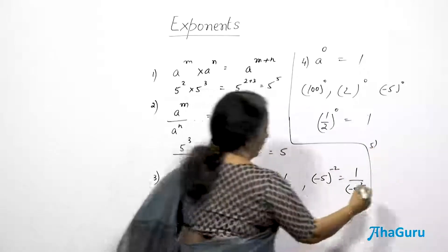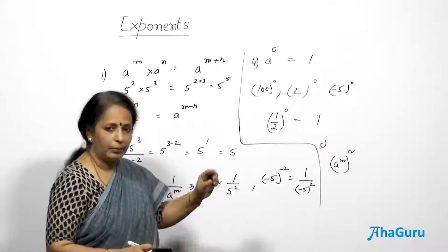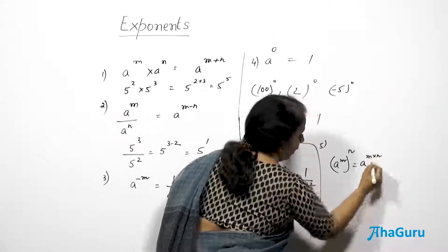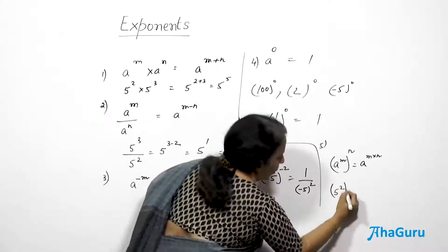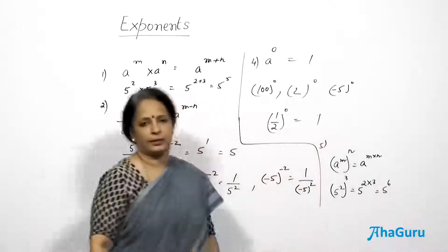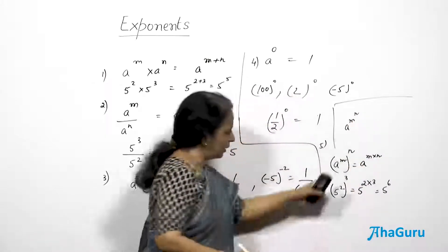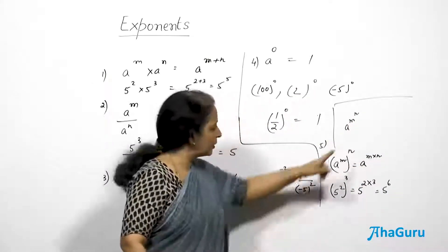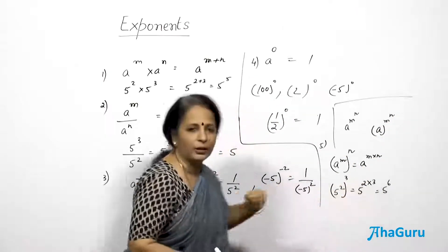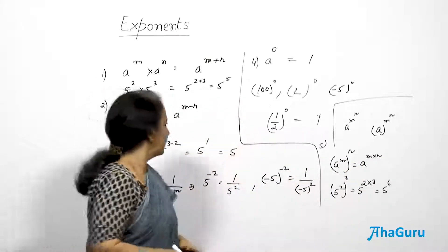The fifth law: (a^m)^n = a^(m×n). So (5²)³ = 5^(2×3) = 5^6. It's important to understand the difference in notation: 'a to the power m, whole to the power n' means (a^m)^n, which equals a^(m×n). This is different from a^(m^n), where there are no brackets — that is read as 'a to the power m to the power n' and means something entirely different.